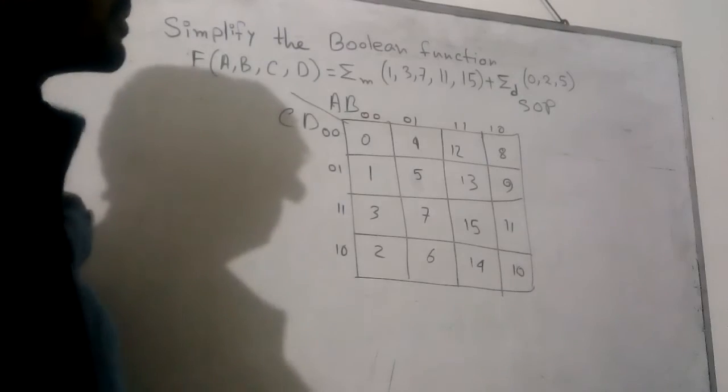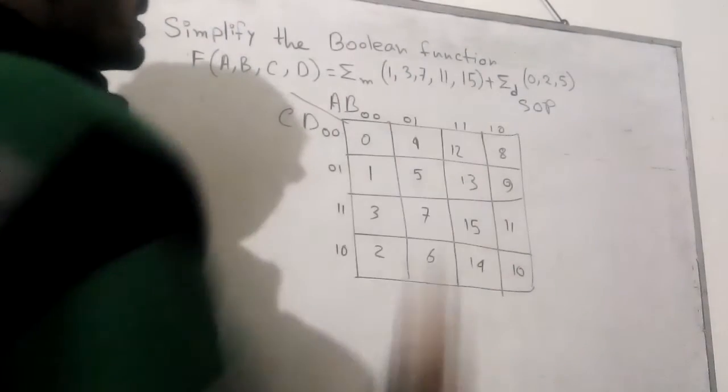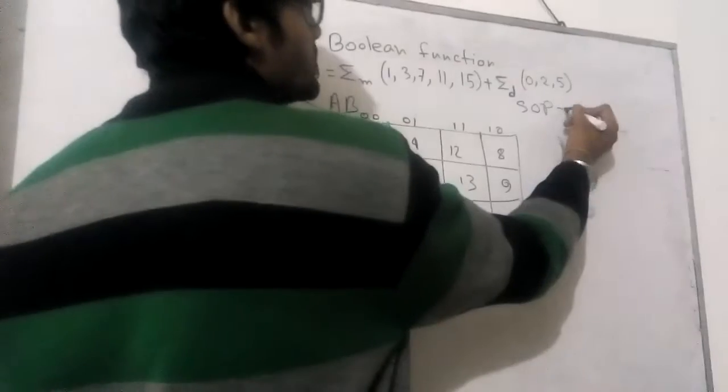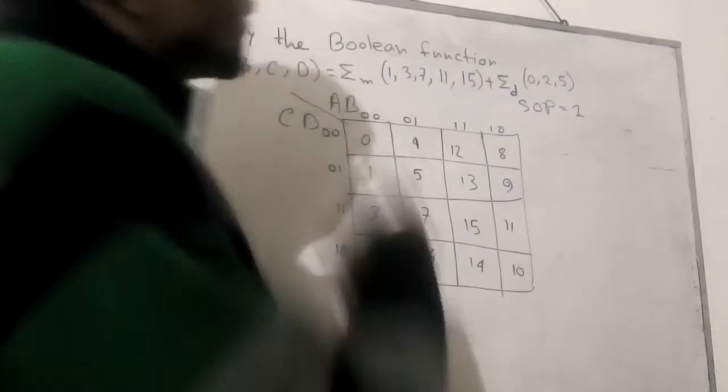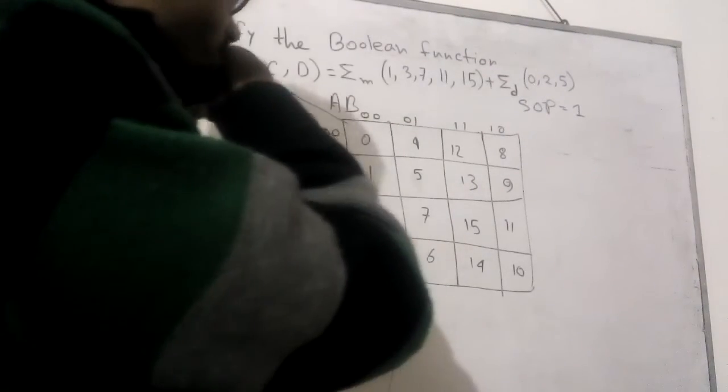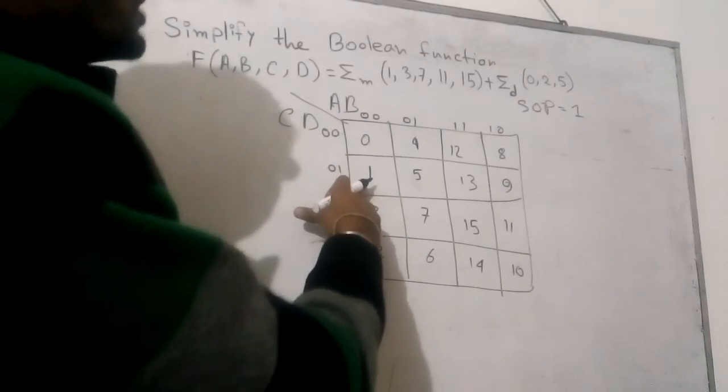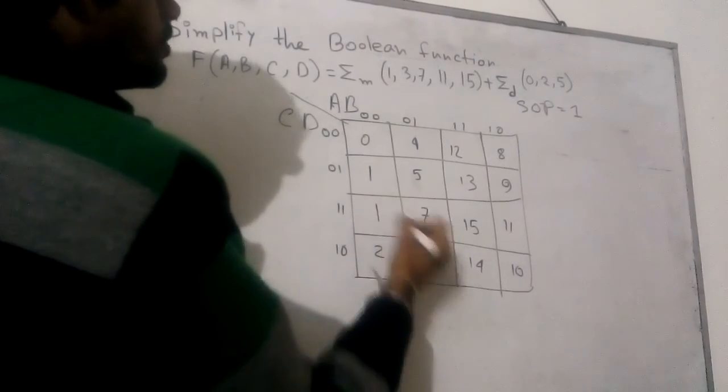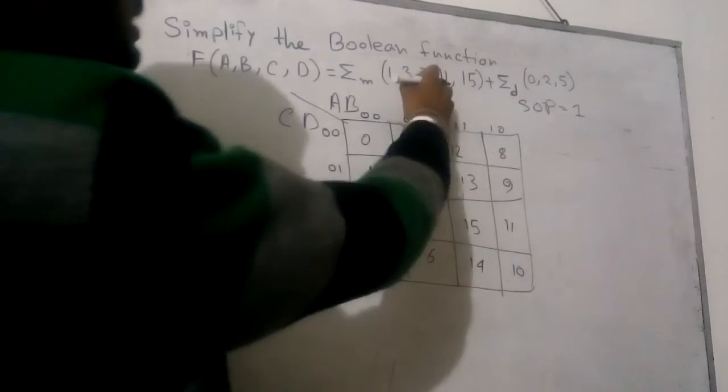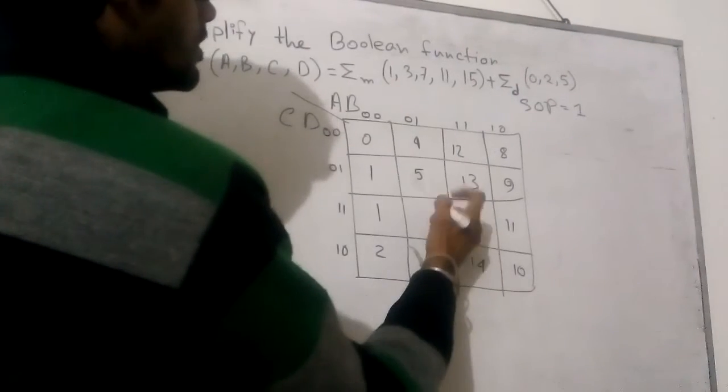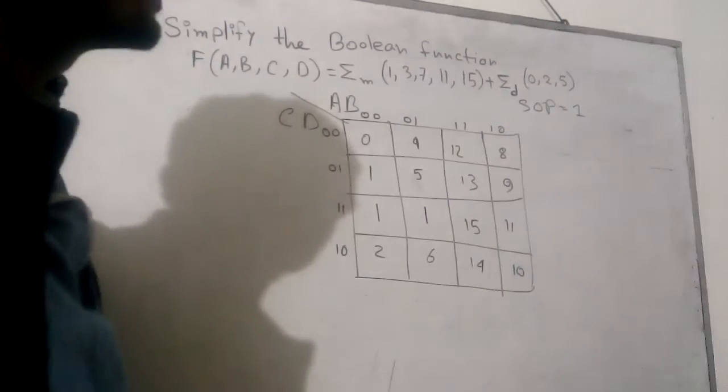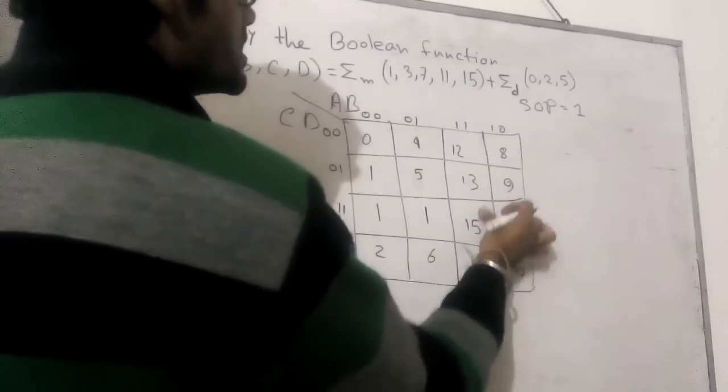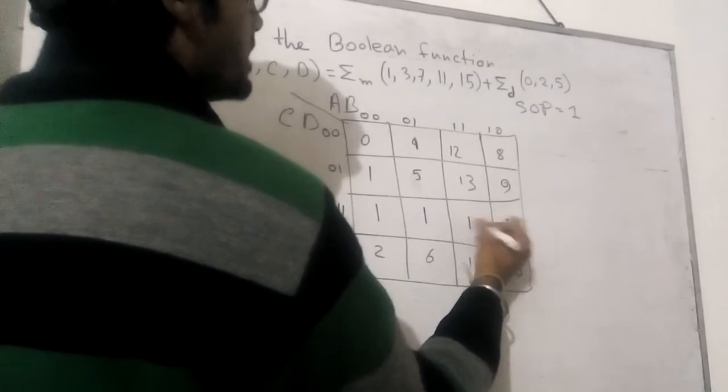So it is 1. As we are solving SOP (sum of products), not POS (product of sums), we have to represent the values as 1. We represent SOP with 1, not 0. So here we got 1 in position 3, I have to put 1.